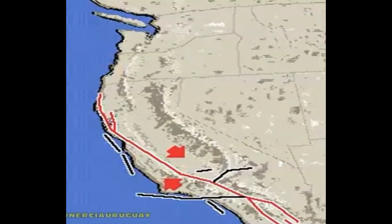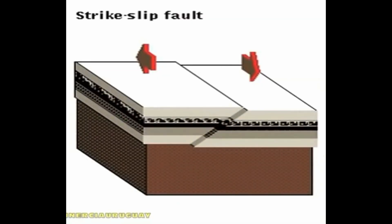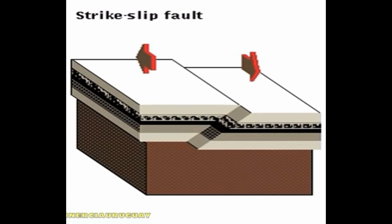The two sides of the fault line are actually two gigantic moving sections, or plates, of the Earth's crust. The crack in the Earth is created because one plate is moving relative to the other. When the plates move past each other, the relative motion is horizontal, and we have a strike-slip fault. The San Andreas fault, for example, is a strike-slip fault.